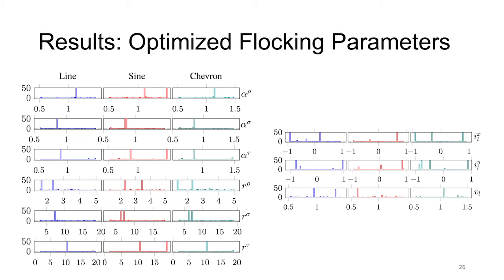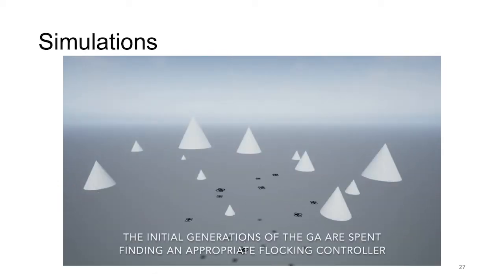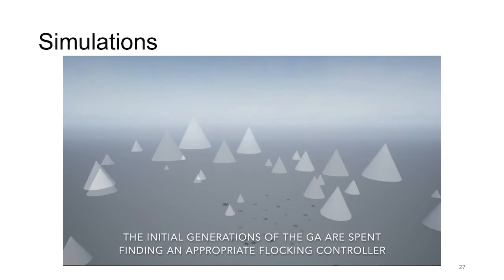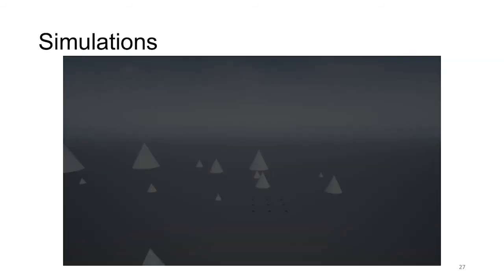These are the optimized flocking parameters after convergence. One of the most interesting results is that they converge to different values for the three different trajectories. This first video summarizes the evolution process of a private flock in AirSim.